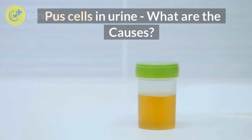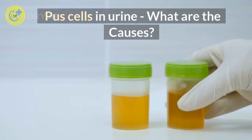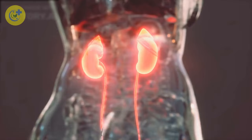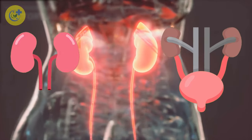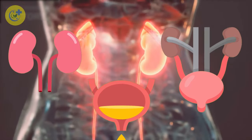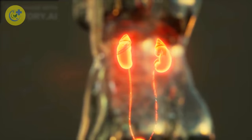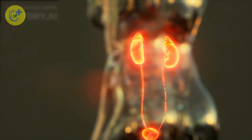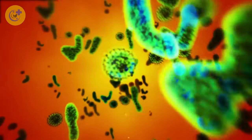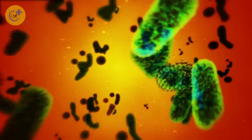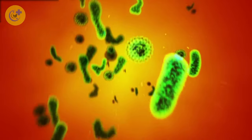Pus cells in urine — what are the causes? Urinary tract infections are common infections that affect the kidneys, bladder, and urethra. UTIs often cause pain when you urinate and foul-smelling urine. However, if you notice blood in your urine or pus cells in your urine after an infection, it's important to contact your doctor immediately because it could be the sign of something much more serious, like kidney disease or bladder cancer.